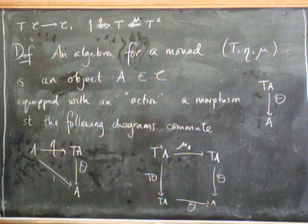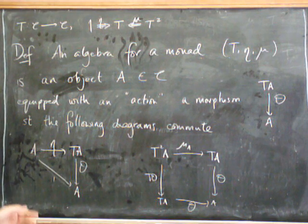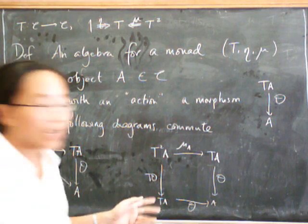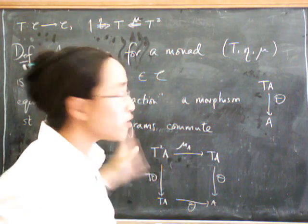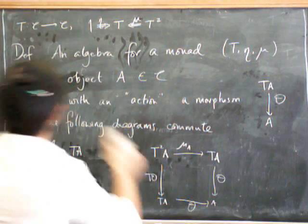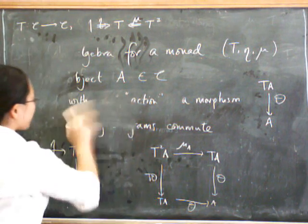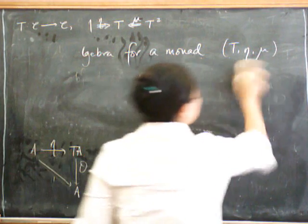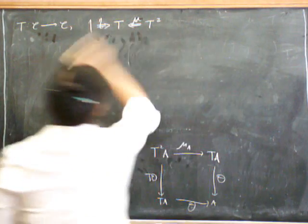So that is the definition of an algebra for a monad. Now let's see what it means in one of the examples we had before, which is the monad for monoids. Let's get rid of this stuff but leave the axioms there and see what they're saying.